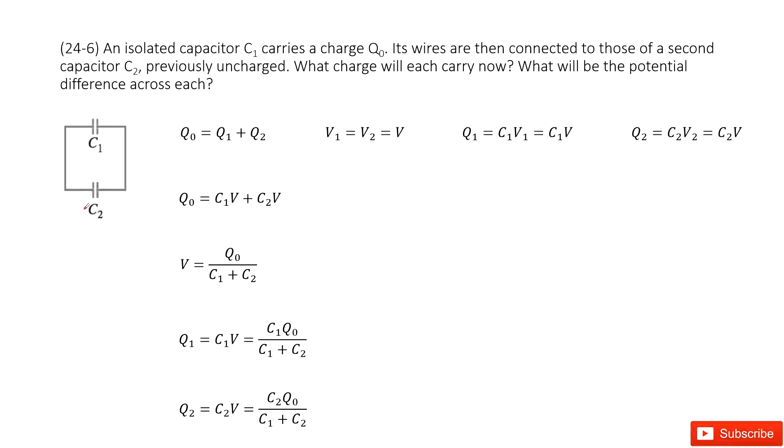So how can we do that? We can consider the charge is conserved. Initially the charge is Q0 and finally this charge was distributed in C1 as Q1 and C2 as Q2. So the charge from C1 will flow out to C2.